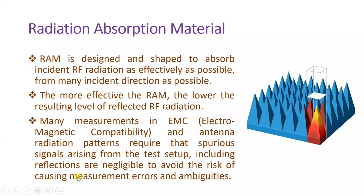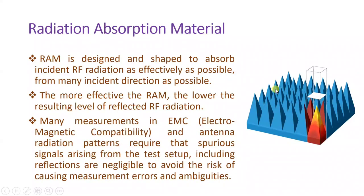During measurement, radiation from the test setup, device, and cabling will affect the measurement data. This effect is compounded by reflections from the wall of the chamber. By using radiation absorption material on the walls, we can avoid internal reflections and reduce measurement errors.